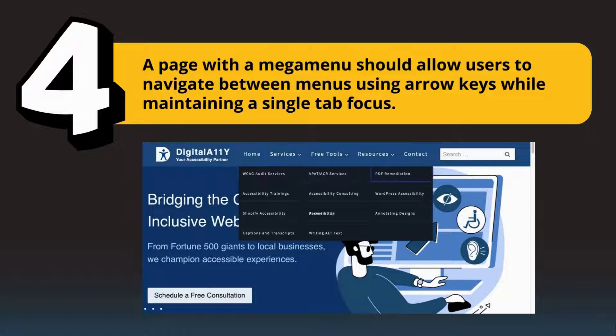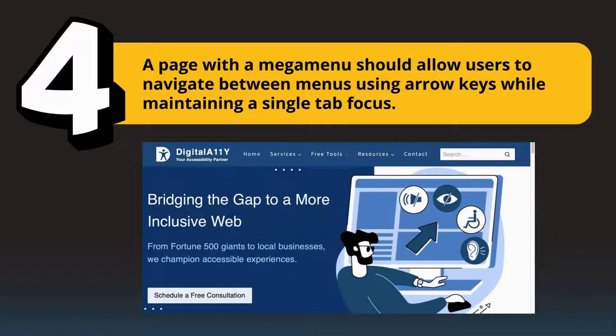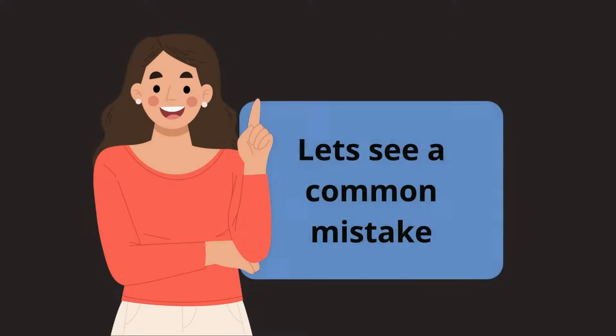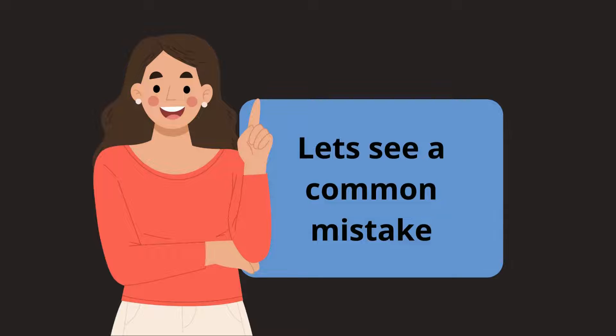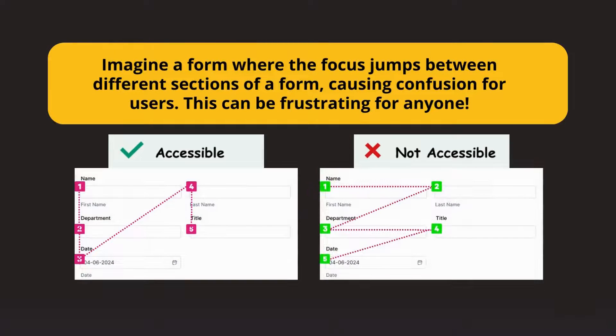A page with a mega menu should allow users to navigate between menus using arrow keys while maintaining a single tab focus. Now let's see what can go wrong. Imagine a form where the focus jumps between different sections causing confusion for users. It can be frustrating for anyone.